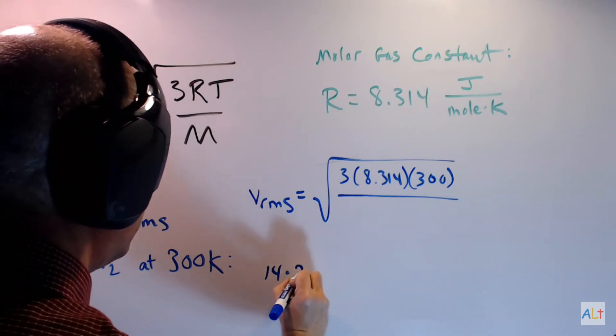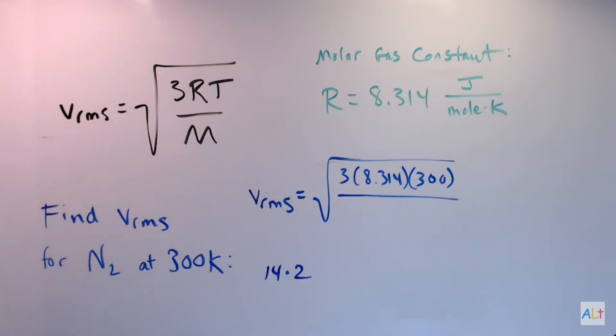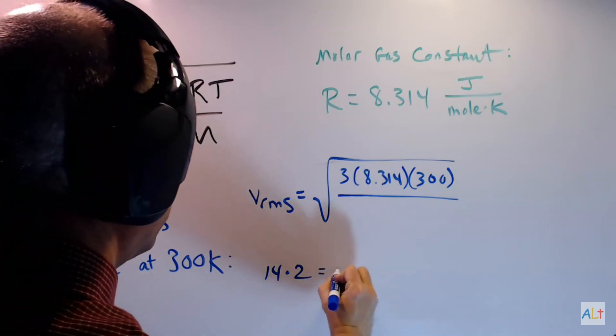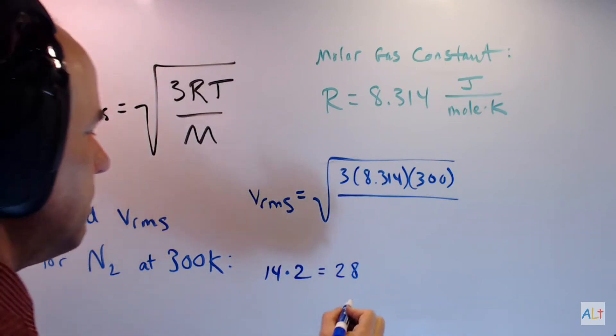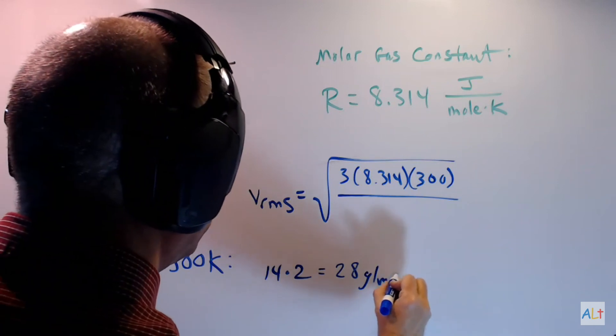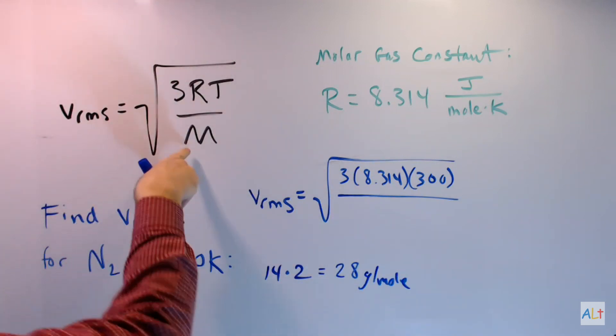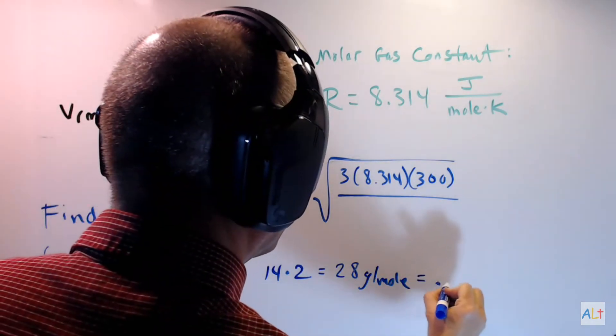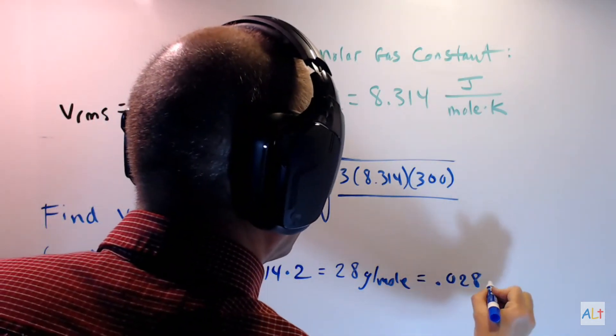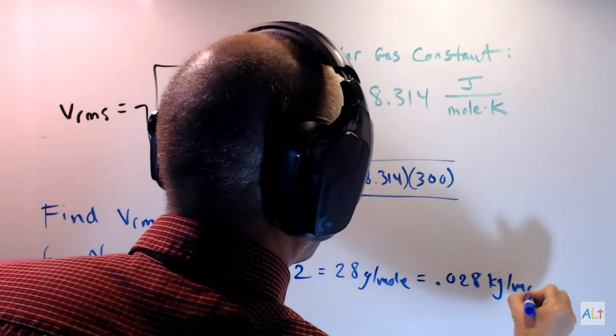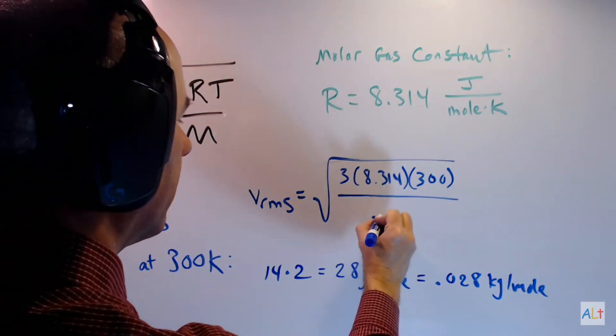We have to multiply by 2 because nitrogen is diatomic. And so we get 28. That's the molar mass in grams, grams per mole. But that's not what we want. We want kilograms. So we divide by a thousand.